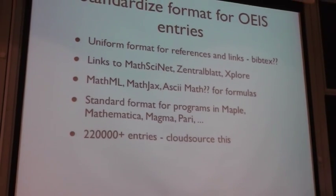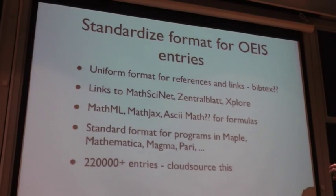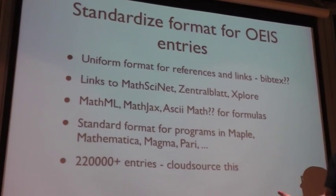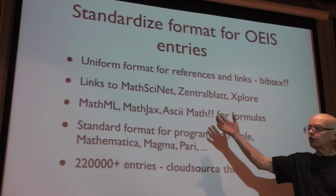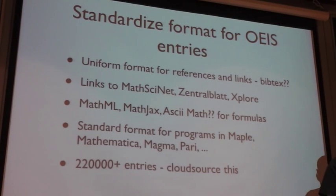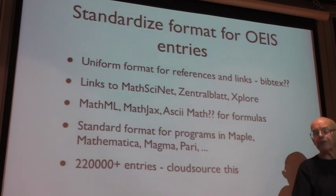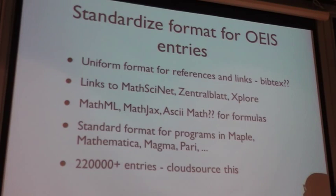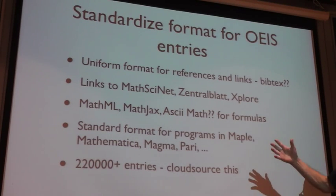Another thing for the future is to standardize entries in the OAIS. At the moment, all the references are in all different kinds of formats. I don't know what the best format is. Is there a uniform format that takes care of journal references, books, links, URLs? I would like to systematize, just to make it easier to search. Bibtex is okay, but Bibtex doesn't really work. It has some drawbacks. Another thing is I'd like to have links to MathSciNet, the Central Blatt, IEEE Explorer, and so on from the sequences.